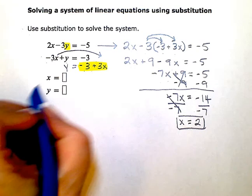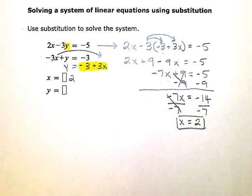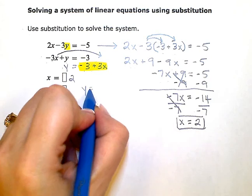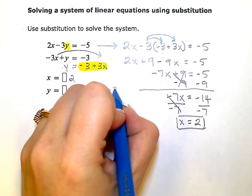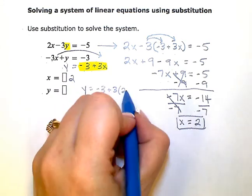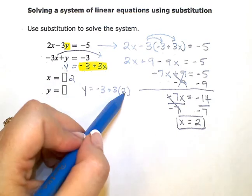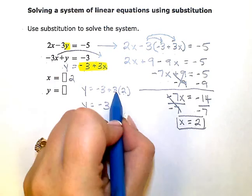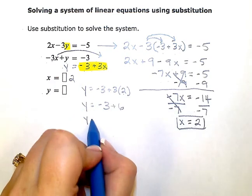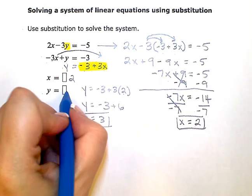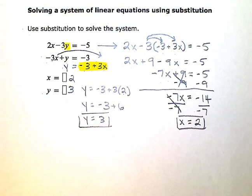So the x value of my solution is 2. Now I just need my y. So I'm going to use this one that tells me that y is equal to negative 3 plus 3 times whatever x is. Well, I know that x is 2. So instead of x, I'll just put in the value 2 and then simplify. So negative 3 plus 3 times 2 is 6, and negative 3 plus 6 is positive 3. So the y value of my solution is positive 3. As an ordered pair, my solution would be 2 comma 3.